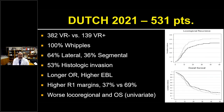The group from the Netherlands did a matched cohort with 139 venous resections, all Whipples, more lateral than segmental resections. They also reported greater than 50% histologic invasion, longer OR times, higher estimated blood loss, and higher positive margin rates. On univariate analysis, they showed worse local-regional failure and overall survival in those who underwent venous resection.